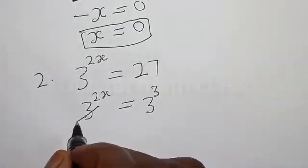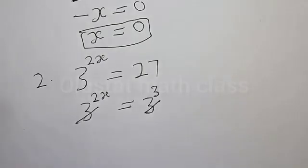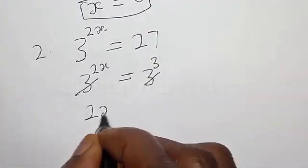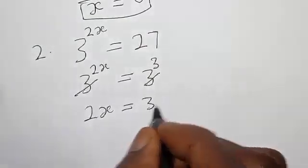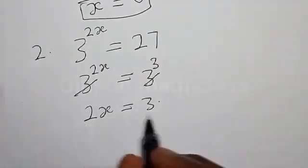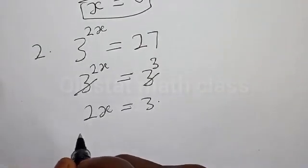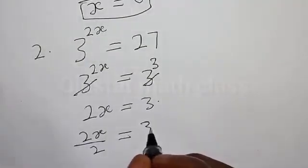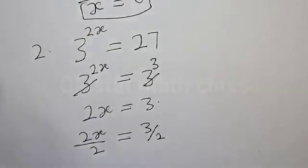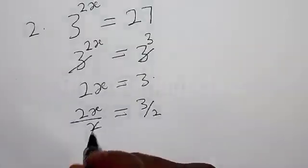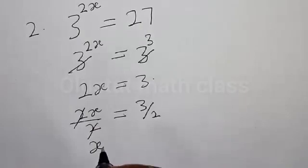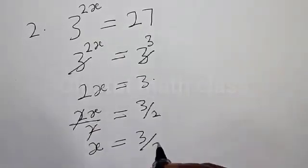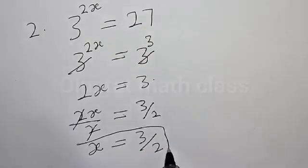Now they have the same base, so we cancel the bases. We are left with 2s is equal to 3. We divide both sides by 2, giving us 2s divided by 2 is equal to 3 divided by 2. Therefore, s is equal to 3 divided by 2. That is the value of s.